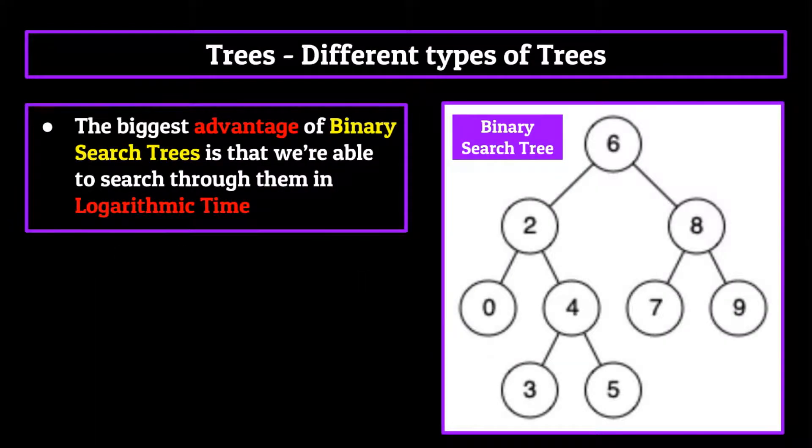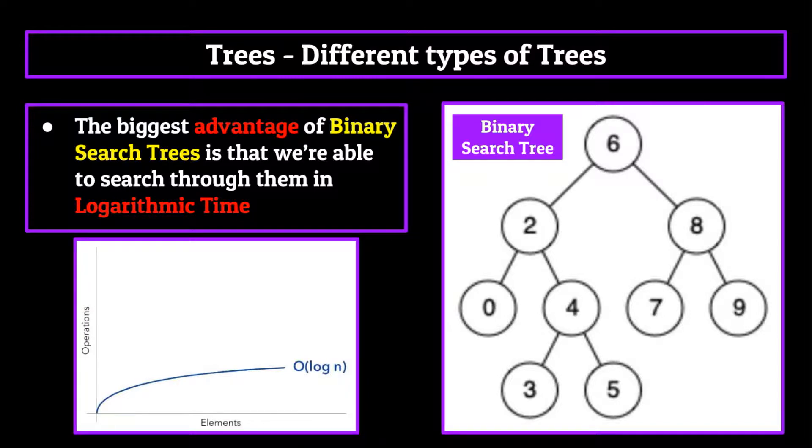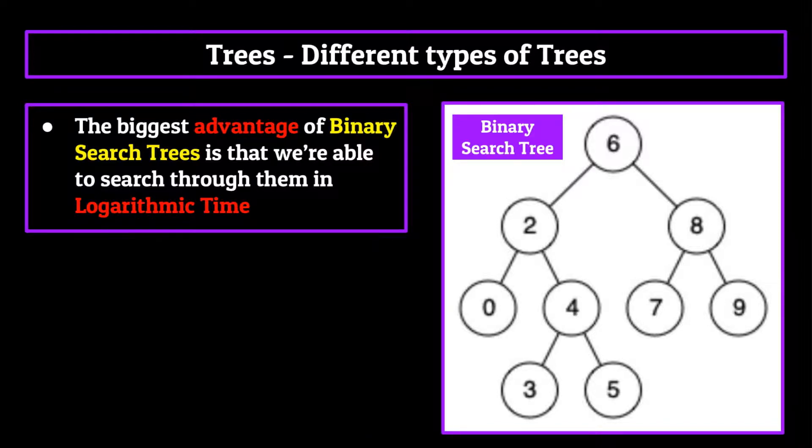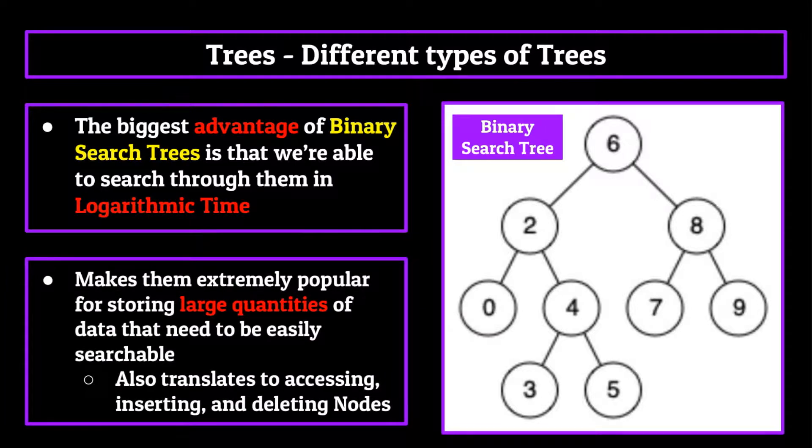Well, the biggest advantage of a binary search tree is that we're able to search through them in logarithmic time. Because there is natural order to the way that the data is stored, it makes it extremely easy to search for a given value. Logarithmic time, if you remember back to our episode on time complexity, was the one where we got more bang for our buck, the greater number of elements or nodes we had in the data structure. All we have to do when searching is say, go left if the value we're searching for is less than the root node, and go right if it's greater, wash rinse repeat until we find our desired node.